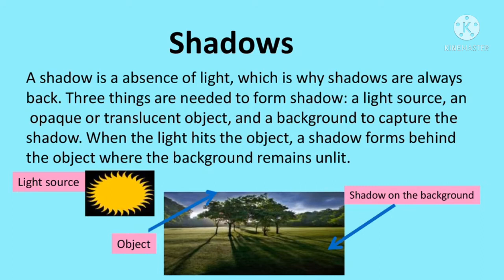A shadow is an absence of light, which is why shadows are always dark. Three things are needed to form a shadow: a light source, an opaque or translucent object, and a background to capture the shadow. When light hits the object, a shadow forms behind the object where the background remains unlit.